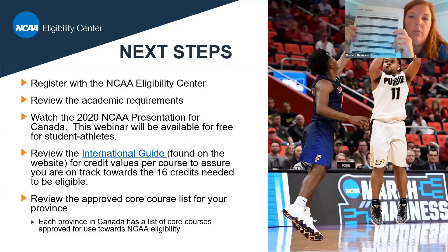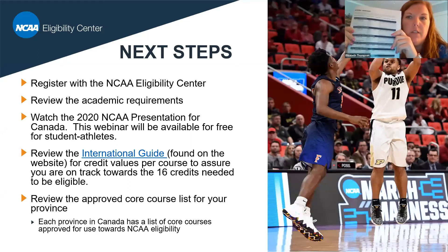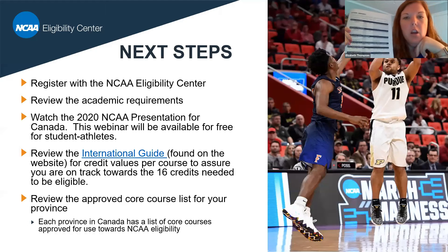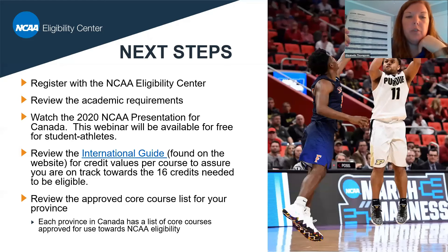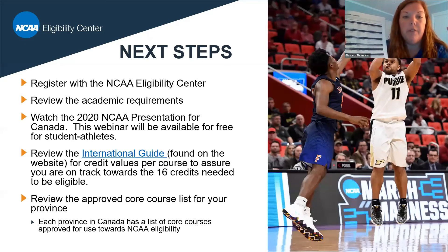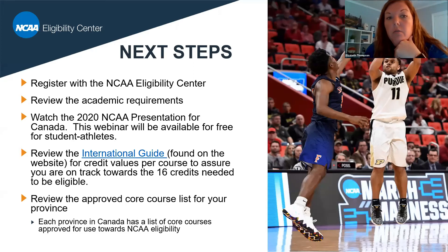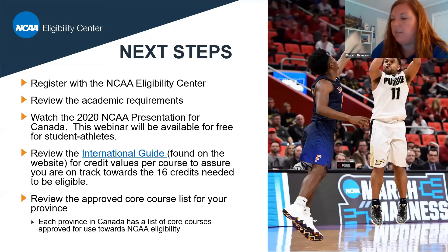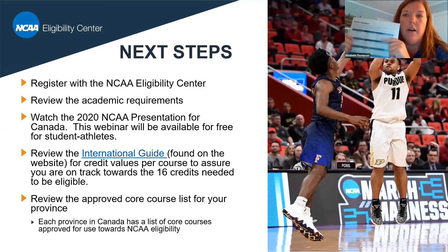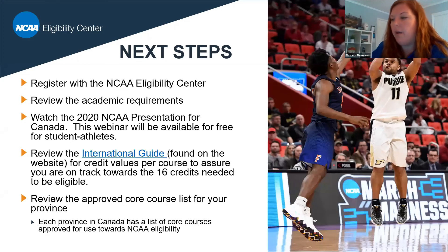That worksheet is great if you need to do a self-assessment of your transcripts and find out how many core course credits you have, maybe after year nine or year ten. Have your transcript, your list of approved core courses for your province, and the provincial PDF that helps you with credit values in front of you. Then fill in the worksheet — it will help you calculate your GPA and the number of core course credits you have.